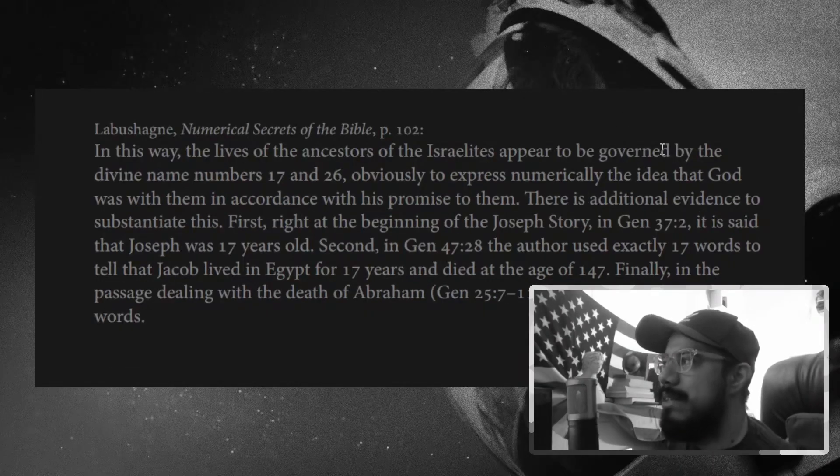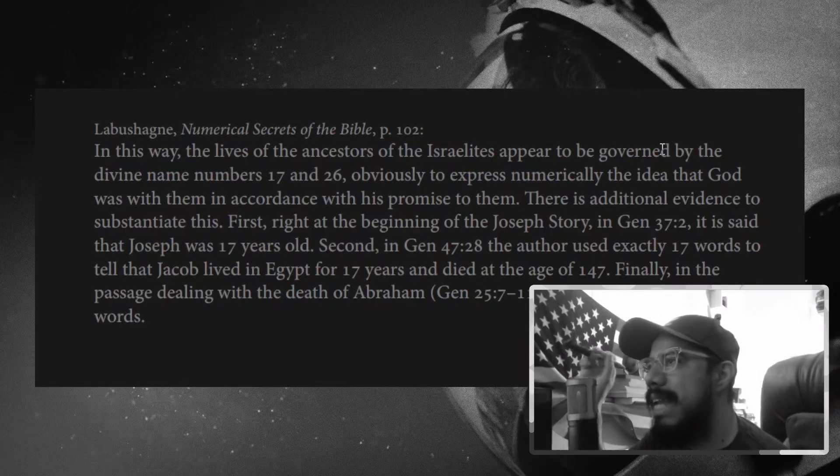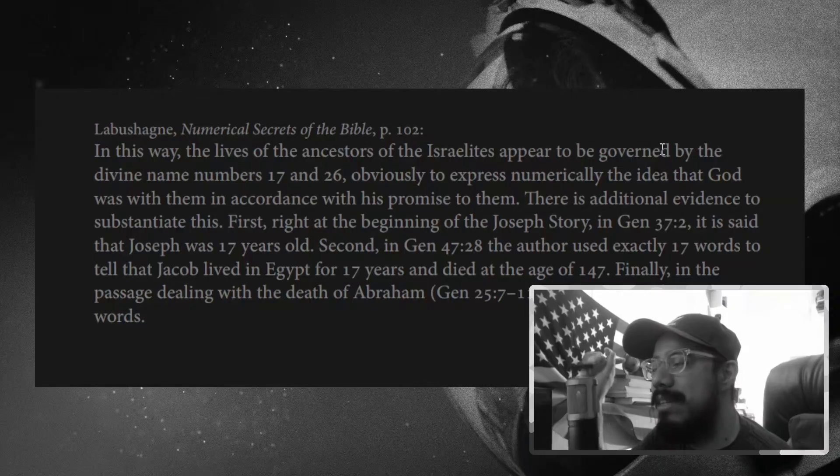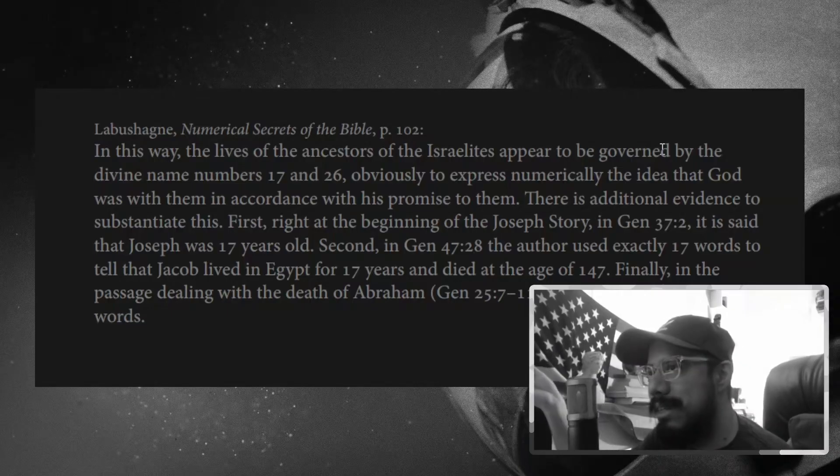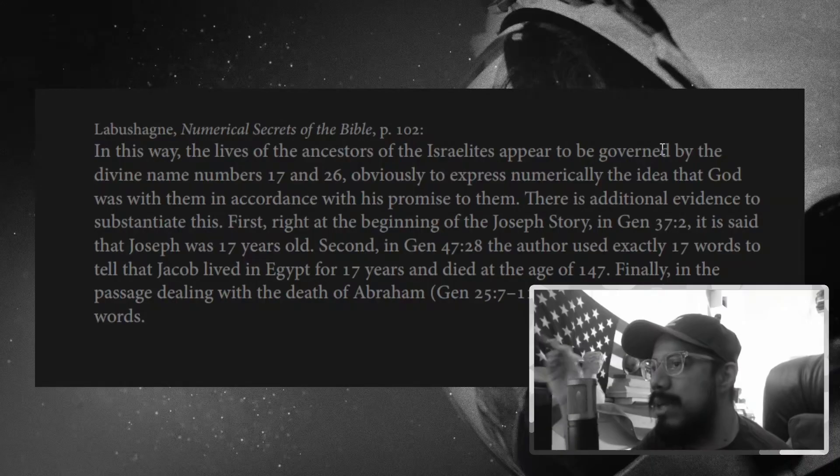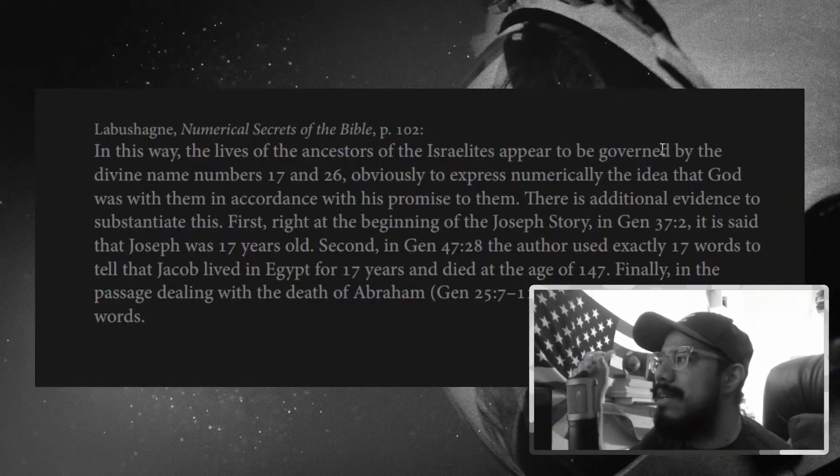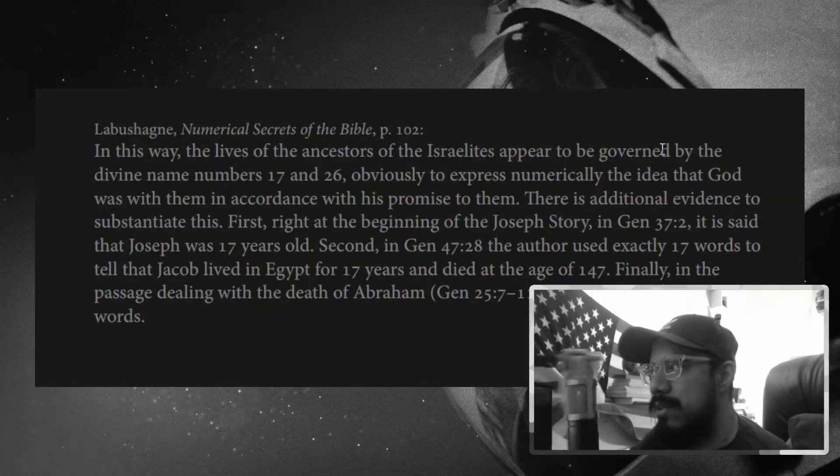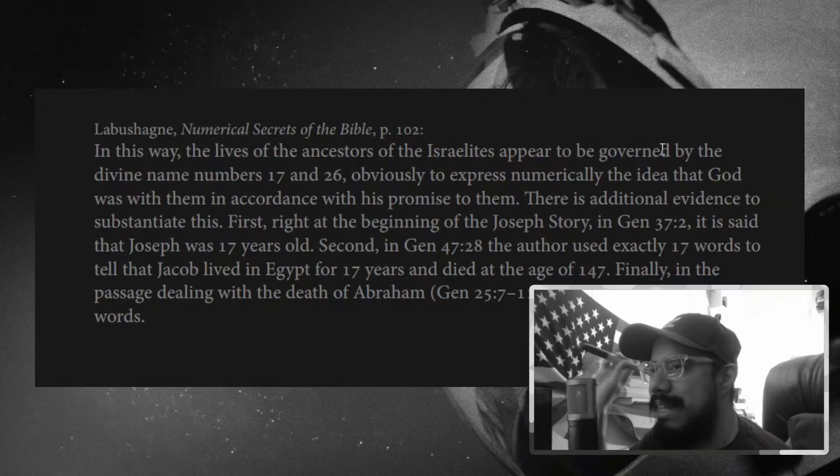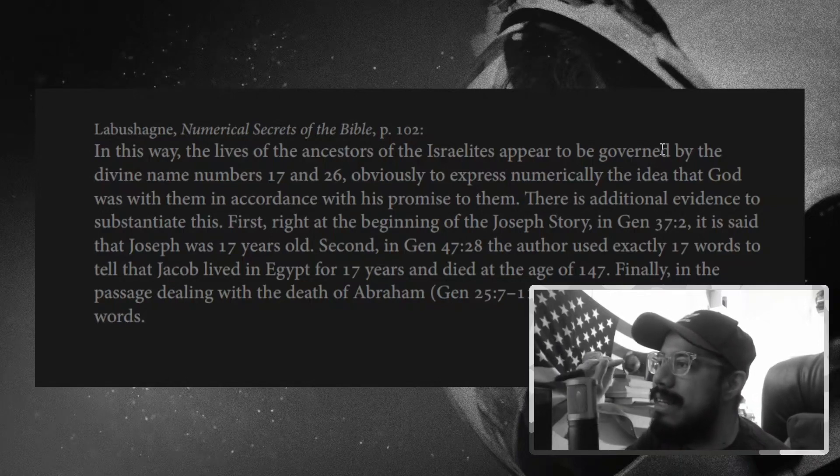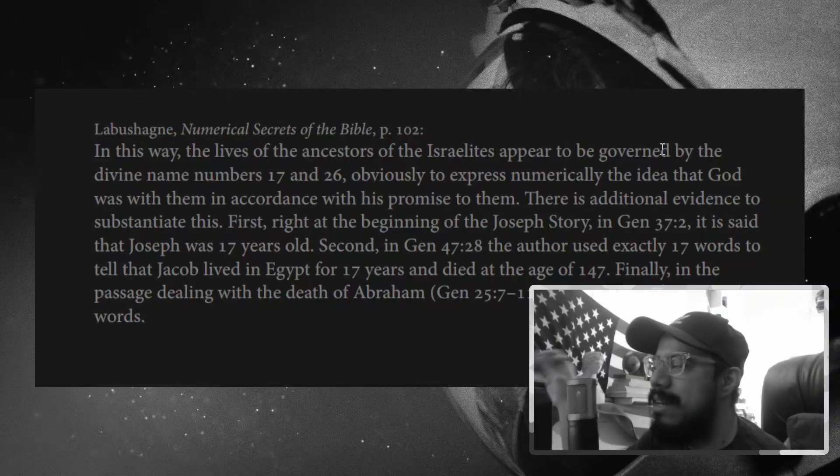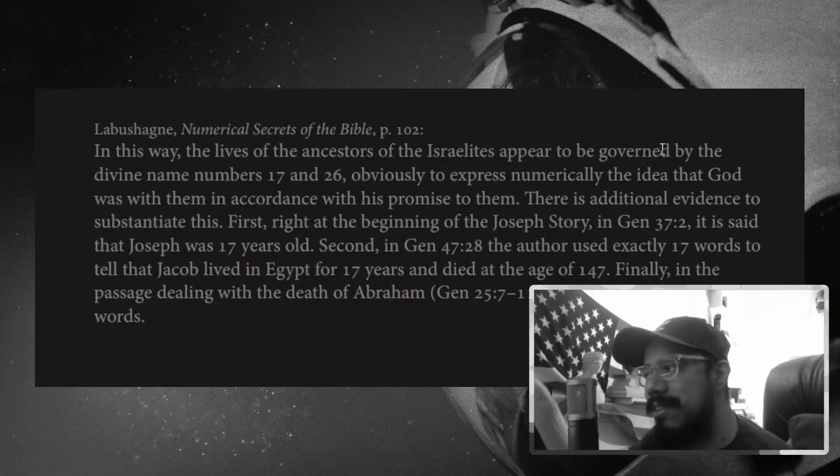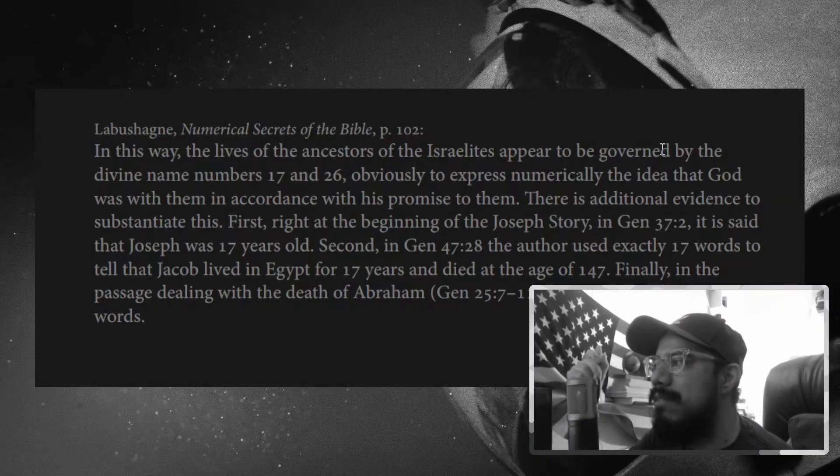Labashane is going to close this out here. He says, in this way, the lives of the ancestors of the Israelites appear to be governed by the divine name numbers 17 and 26, obviously to express numerically the idea that God was with him in accordance with his promise to them. There is additional evidence to substantiate this. First, right at the beginning of the Joseph story, in Genesis 37:2, it is said that Joseph was 17 years old. Second, in Genesis 47:28, the author used exactly 17 words to tell that Jacob lived in Egypt for 17 years and died at the age of 147.